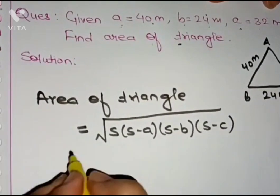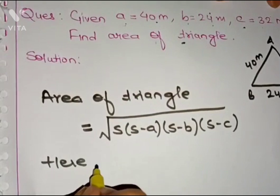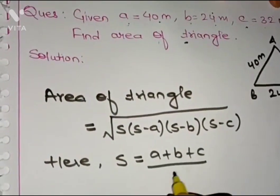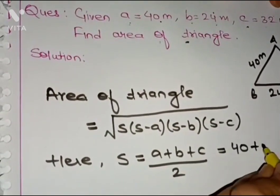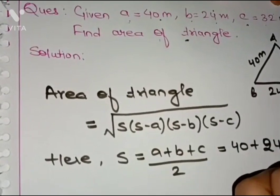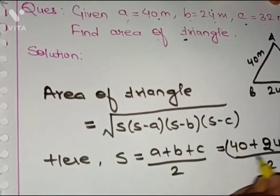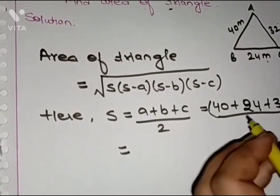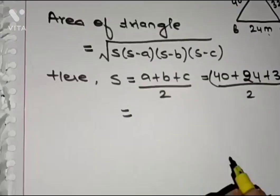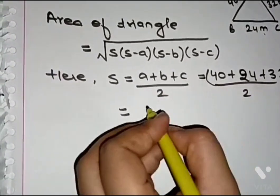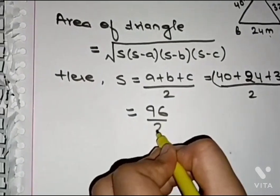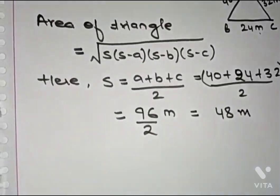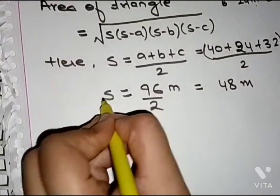First we find s. s = (a + b + c) / 2 = (40 + 24 + 32) / 2 = 96 / 2 = 48 m. So the semi-perimeter s = 48 m.